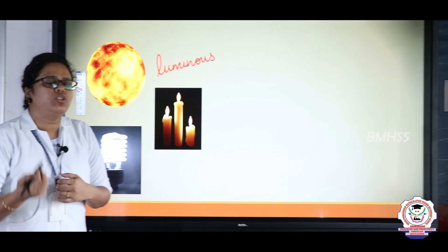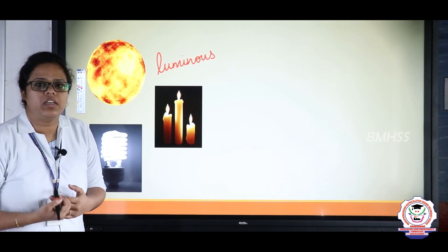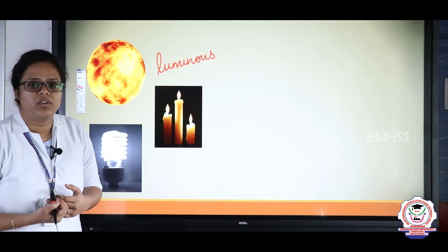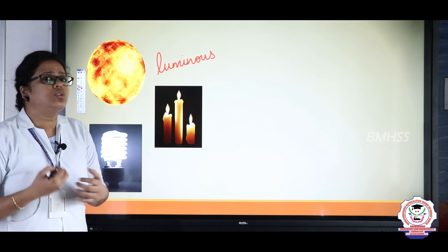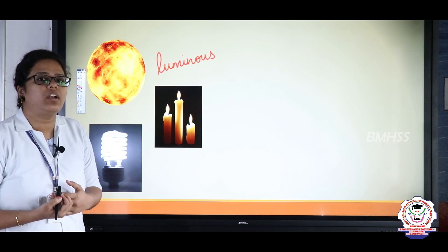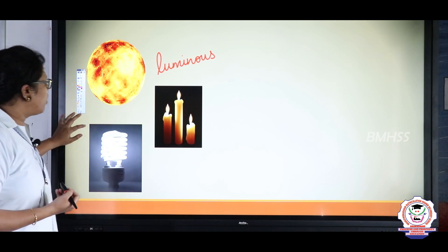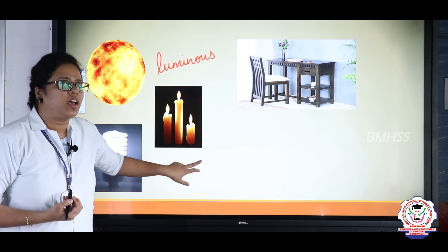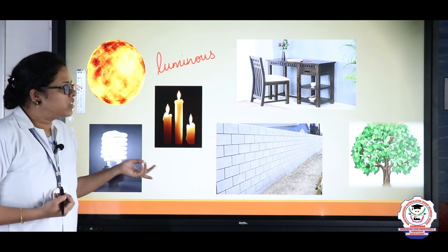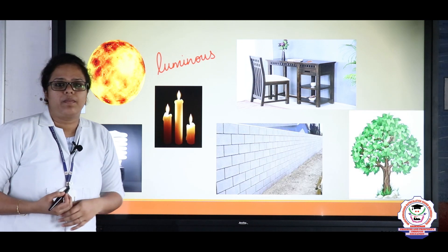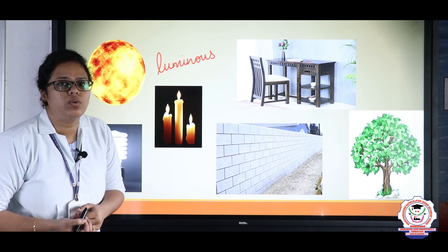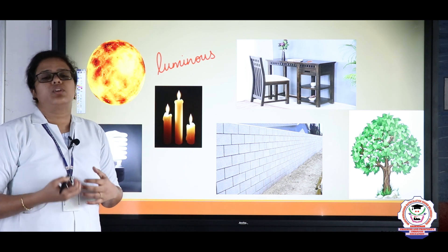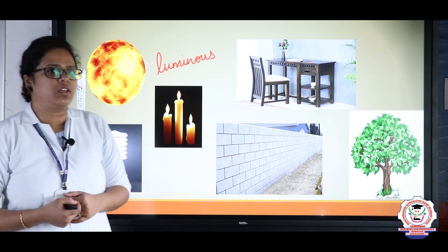Most of the time, we come across objects which are not able to generate their own light — such as the table, the chair, the wall, or the tree. These objects cannot generate their own light, so they are called non-luminous objects.